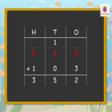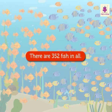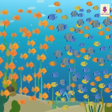Thus, 249 and 103 is equal to 352. There are 352 fish in all. Isn't it beautiful?